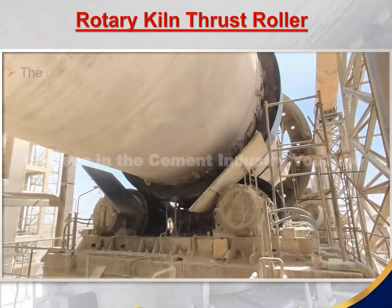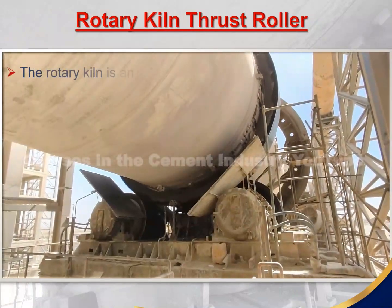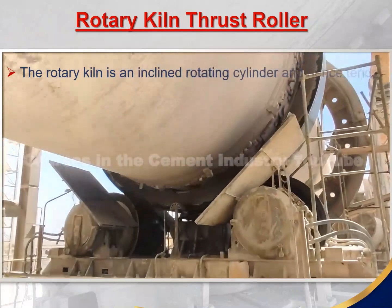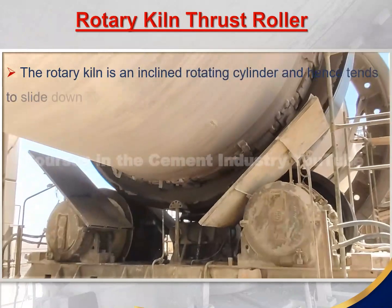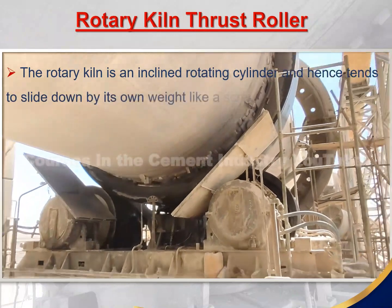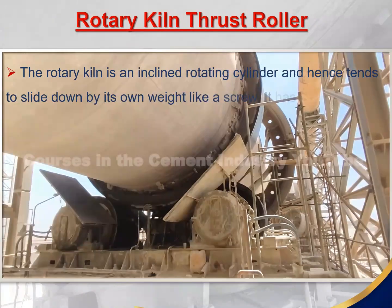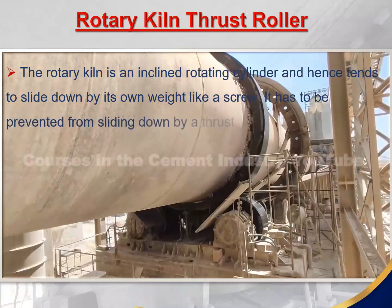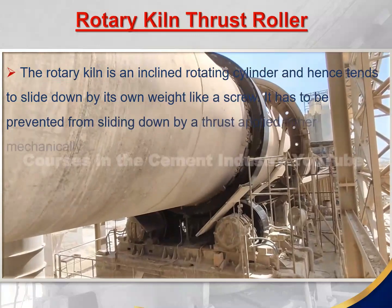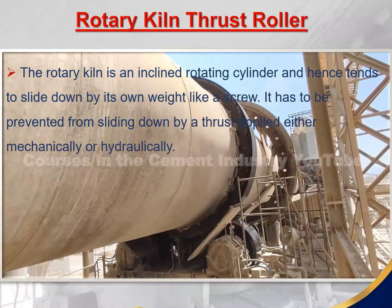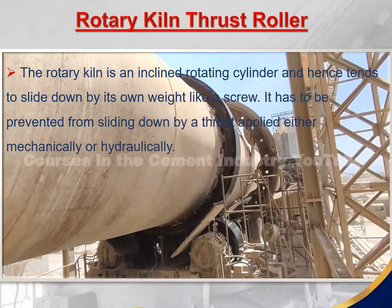The rotary kiln is an inclined rotating cylinder, and hence tends to slide down by its own weight like a screw. It has to be prevented from sliding down by a thrust applied either mechanically or hydraulically.